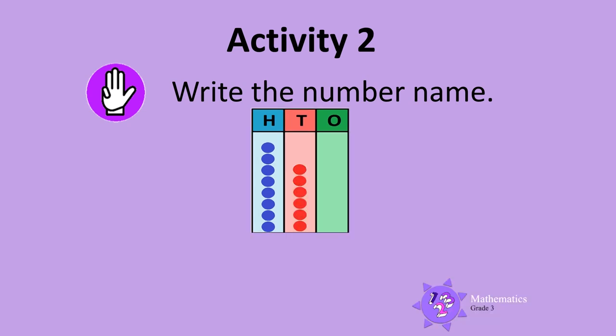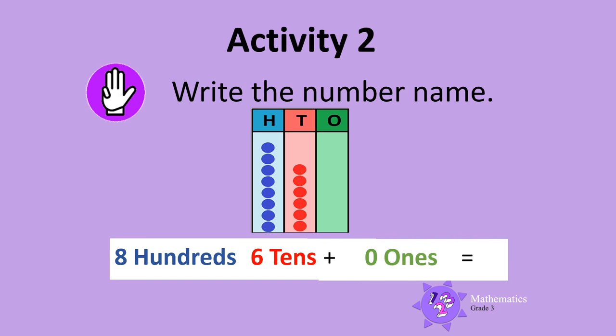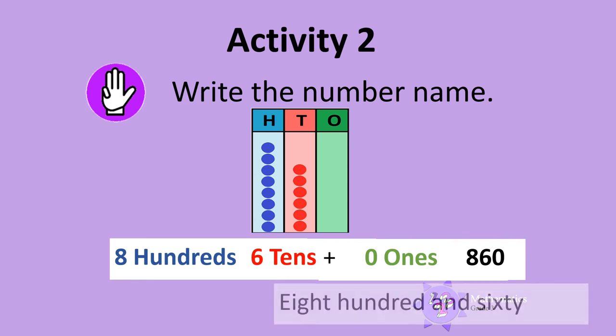Here is one more. There are 8 hundreds, 6 tens, and 0 ones. So the number shown on the abacus is 860. We write the number name eight hundred and sixty.